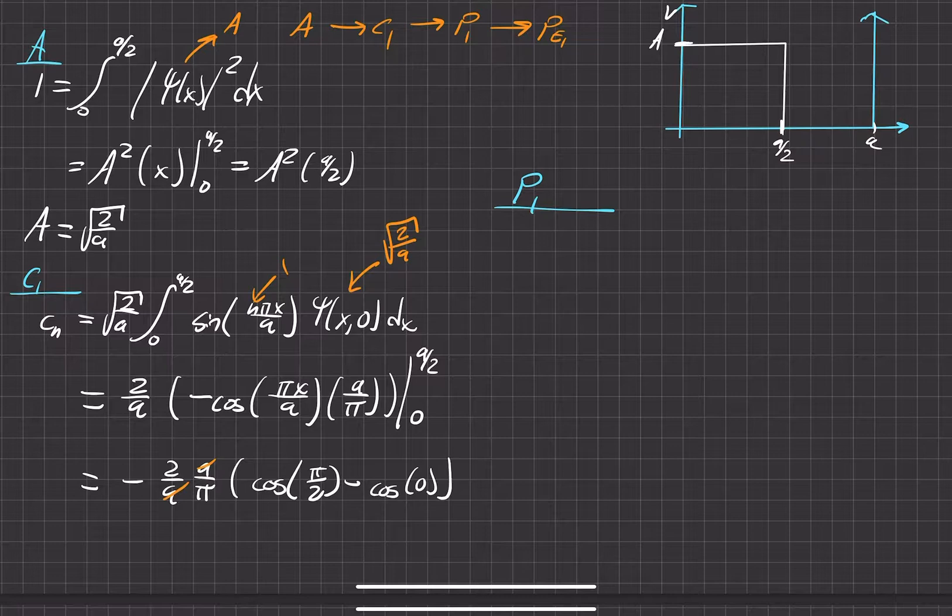Cosine of pi over 2 minus cosine of 0, which is just 1. This is actually 0. So this whole thing will end up being positive 2 over pi. So we're able to find out now that coefficient c_1.